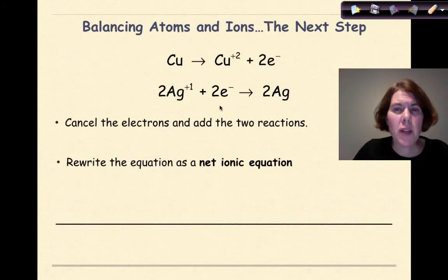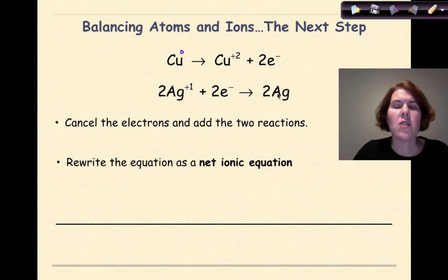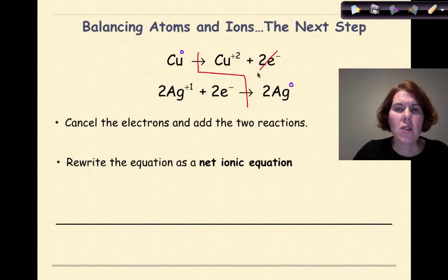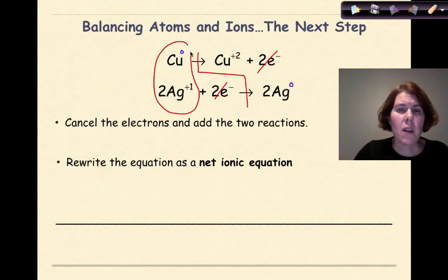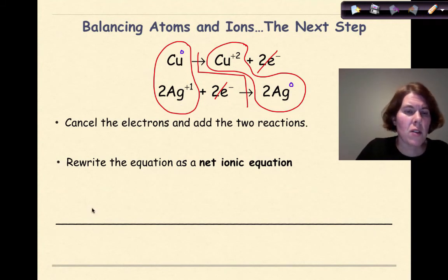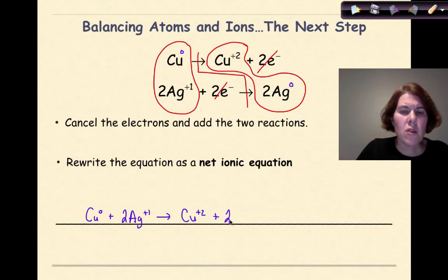Here are my two balanced half reactions: Cu zero is going to Cu plus two and losing two electrons; then two Ag plus one plus two electrons is going to two Ag zero. Now I want to cut these two half reactions in half, cancel the electrons, and add the two half reactions together. Finally, I'm going to rewrite the equation as a net ionic equation. So: Cu zero plus two Ag plus one yields Cu plus two plus two Ag zero, and I have a balanced net ionic equation.